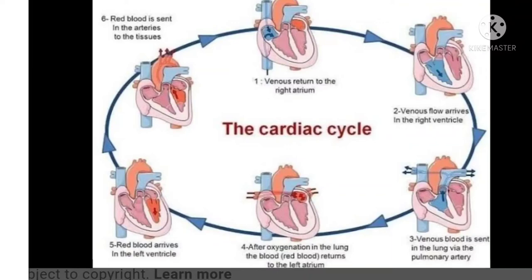The ventricles start contracting and the atria start relaxing — this is the first step of the cardiac cycle. In the second step, on ventricular contraction, blood moves into the aorta and pulmonary artery. The valves between the atria and ventricles are closed. We can hear the first sharp sound of the heart — 'lub'. This is the second part of the cardiac cycle.